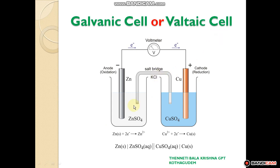The galvanic cell consists of two half-cells. The first half-cell has a zinc rod in zinc sulfate solution. The second half-cell has a copper rod in copper sulfate solution. Both metals are connected by a copper wire through the voltmeter, and the two solutions are linked with a salt bridge in a U-shaped tube containing KCl or ammonium nitrate.